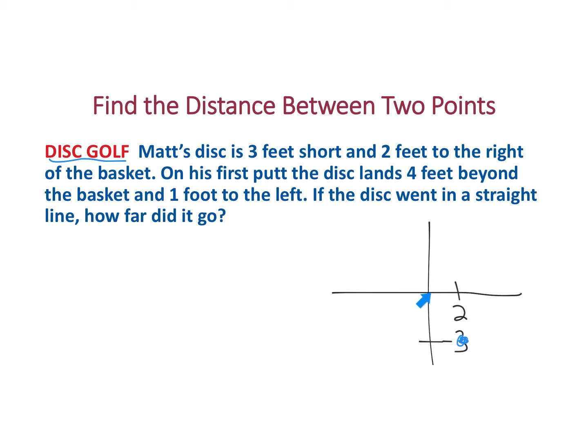He accidentally goes four feet beyond. So beyond would be this way. And then to the left would be this way. So going four feet beyond, we'd go up here to four and then one to the left. We're basically going to find this distance from this one point to the other point. If you wanted to write them as coordinates, we have negative one, four, and then we have positive two comma negative three.